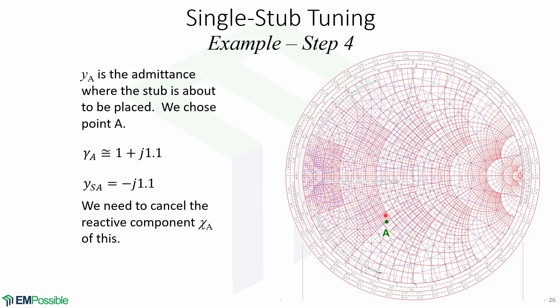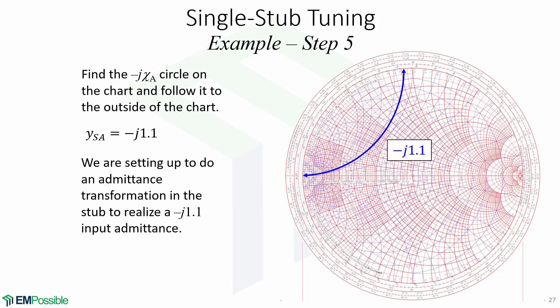We chose point A, so yA is the admittance where the stub is about to be placed — it has a value of 1 + j1.1. So we need to have an admittance of −j1.1 to cancel the reactive component. We achieve this by locating the −j1.1 circle on the chart in order to set up the admittance transformation in the stub.